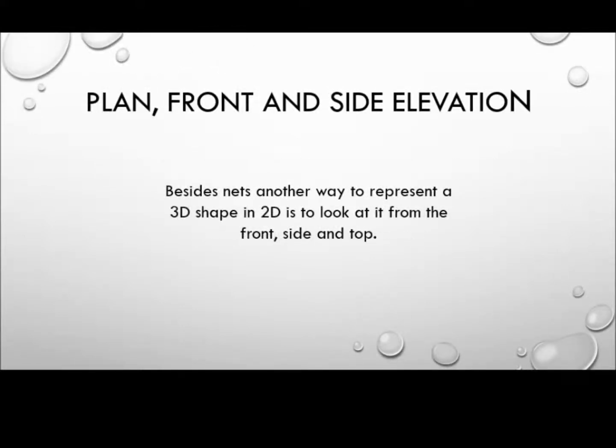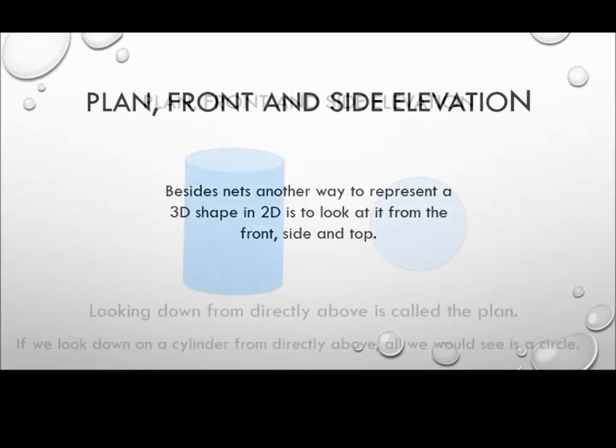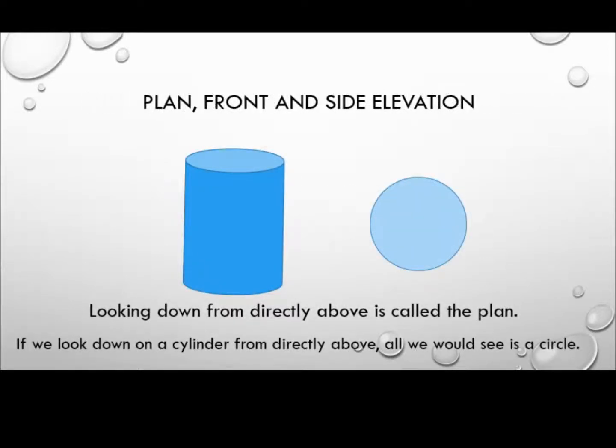Besides nets, another way to represent a 3D shape in 2D is to look at it from the front, side, and top. Looking down from directly above is called the plan. If we look down on a cylinder from directly above, all we would see is a circle.